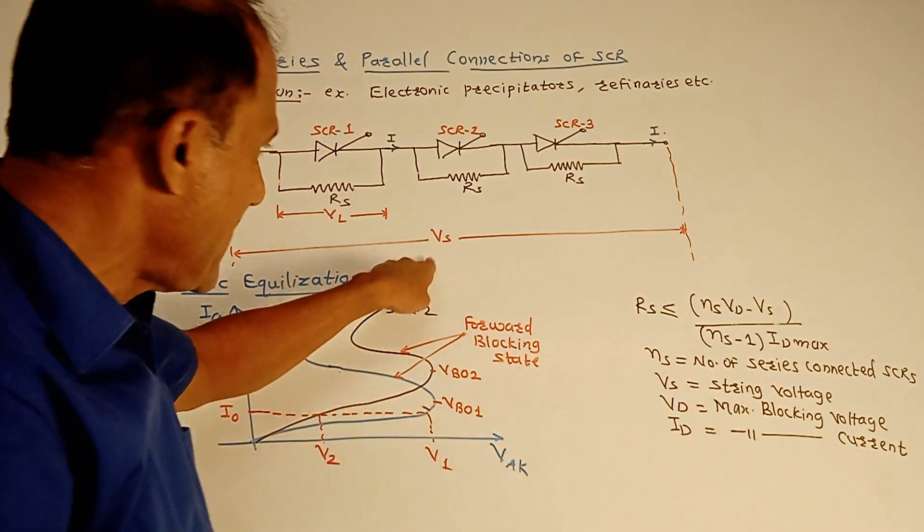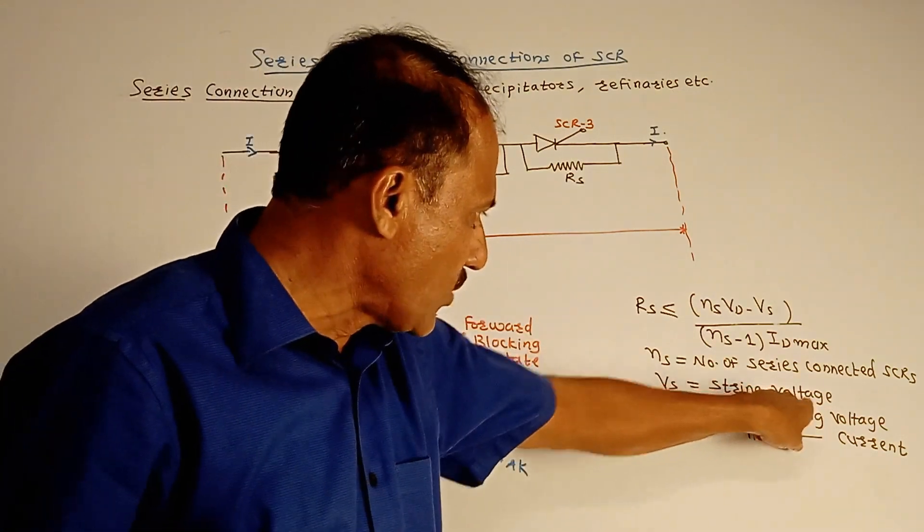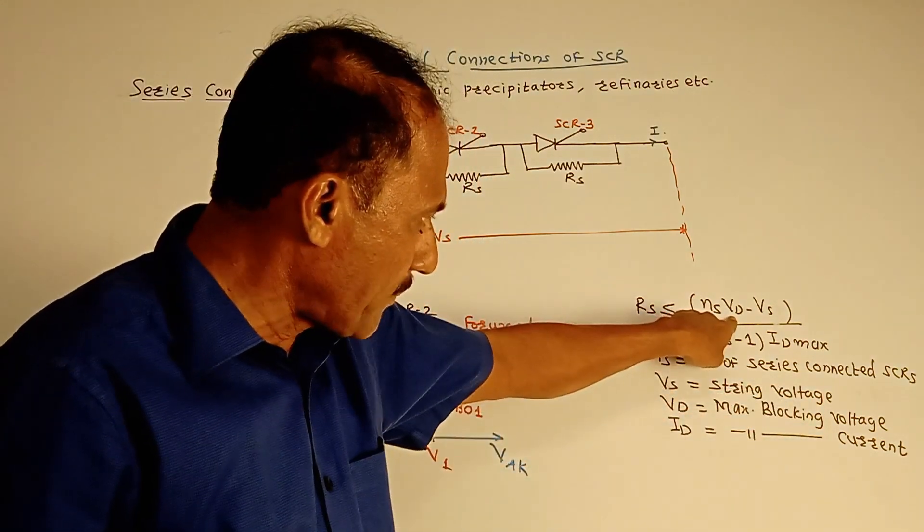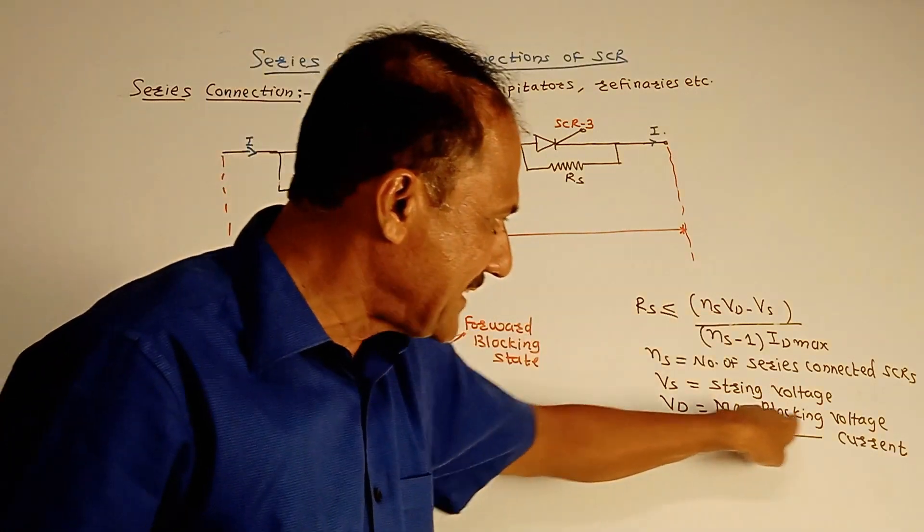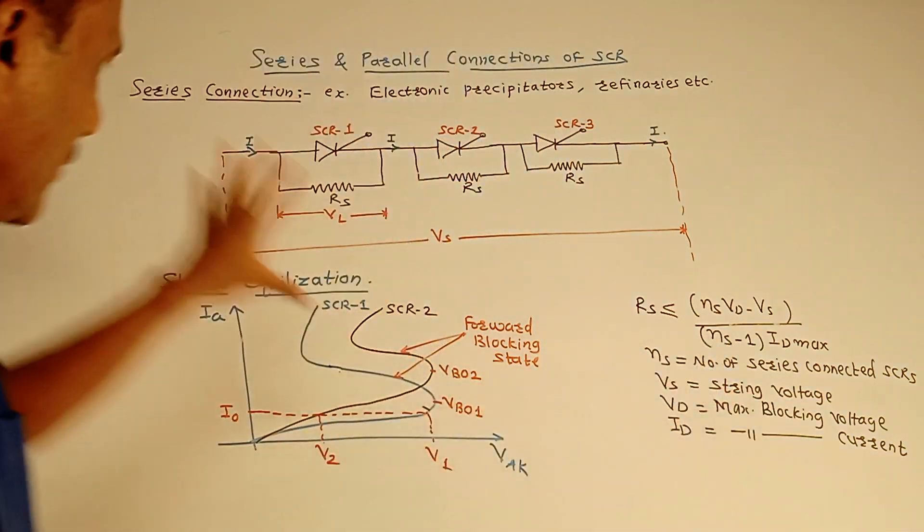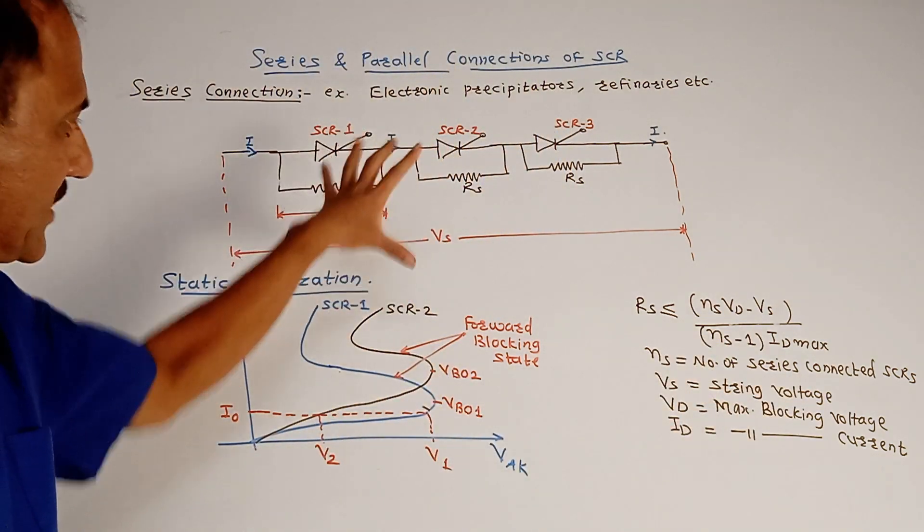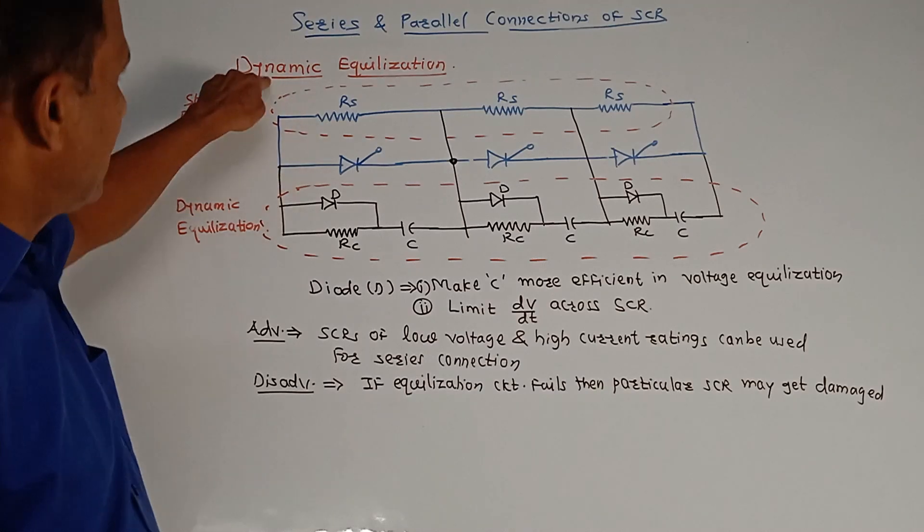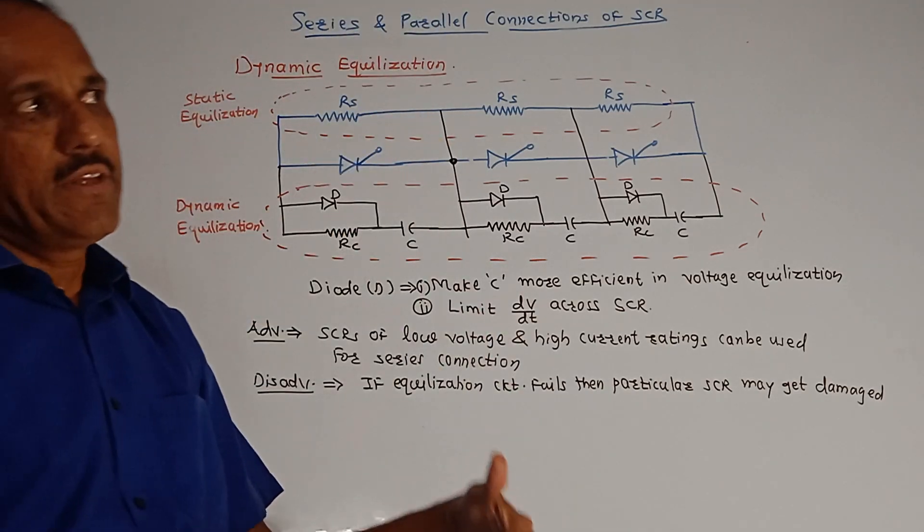And so here, Vd in this formula, this notation Vd is maximum blocking voltage and Id is maximum blocking current. So this is about static equalization circuit. Next is dynamic equalization circuit.